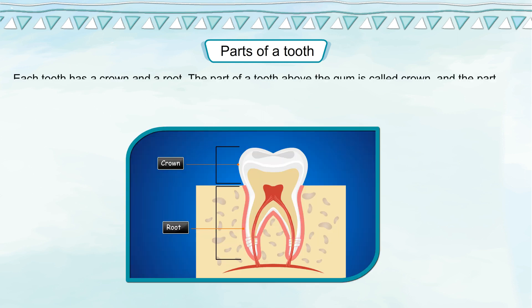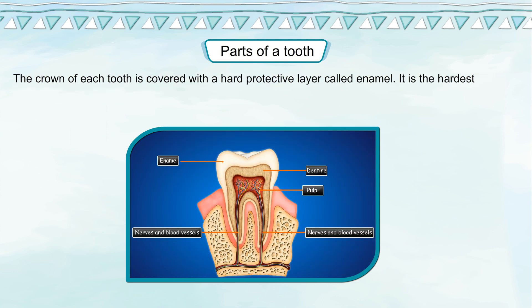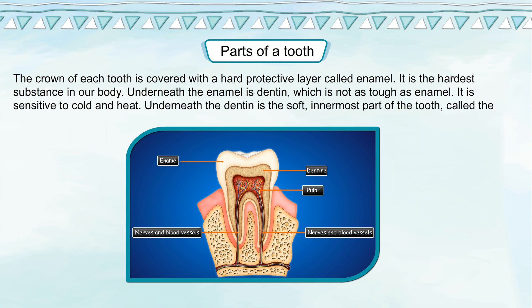Parts of a tooth: each tooth has a crown and a root. The part of a tooth above the gum is called the crown, and the part inside the gum is called the root. The crown of each tooth is covered with a hard protective layer called enamel — it is the hardest substance in our body. Underneath the enamel is dentin, which is not as tough as enamel and is sensitive to cold and heat. Underneath the dentin is the soft innermost part of the tooth called the pulp.